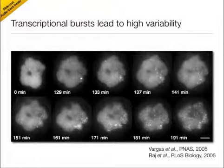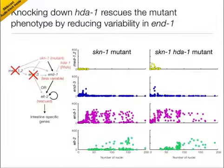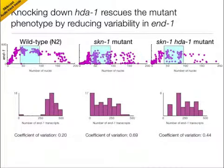We also examined the mechanism of END-1 expression variability. As mentioned earlier, transcription in higher eukaryotes occurs in bursts, and these bursts are thought to be the result of transitions of the gene itself between an active euchromatic state and an inactive heterochromatic state. You can check out our paper in PLOS Biology for more details. To see the effects of chromatin remodeling upon variability in END-1 expression, we knocked down the histone deacetylase HDA-1 in the skn-1 mutant, finding that ELT-2 now expressed to some degree in most embryos. This was caused by a decrease in variability in END-1 expression as compared to the wild-type, suggesting that chromatin remodeling is indeed involved in END-1 expression variability.